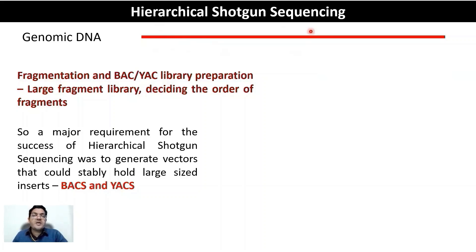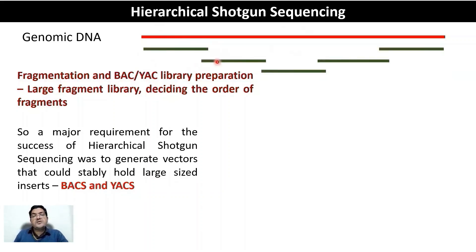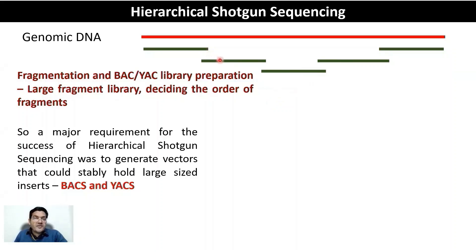The hierarchical shotgun sequencing strategy entails two-step cloning. First, a large fragment library is created, which is cloned into bacterial artificial chromosomes or yeast artificial chromosomes and stably maintained. It is also important to decide the order of fragments at this large fragment stage itself — so you know this is your first fragment, this is the second, the third, the fourth, the fifth.